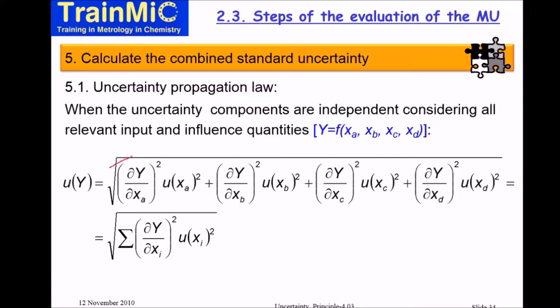In most cases, labs do not need to deal with partial derivatives directly, because there are well-known particular cases of the propagation law. If the measurement result is a linear combination of variables x_A, x_B, x_C, x_D with constants k_A and so on that have no uncertainty, then by applying the uncertainty propagation law, the combined standard uncertainty is the square root of the sum of the squares of each constant times the standard uncertainty of the associated variable.